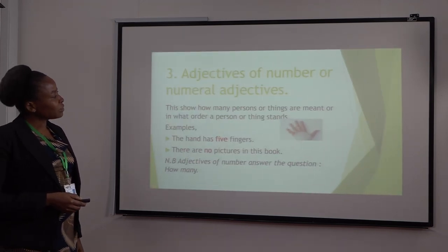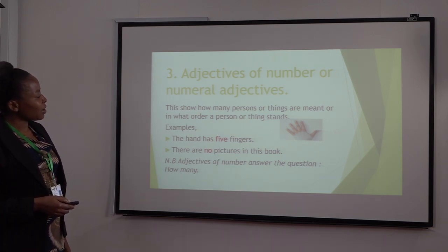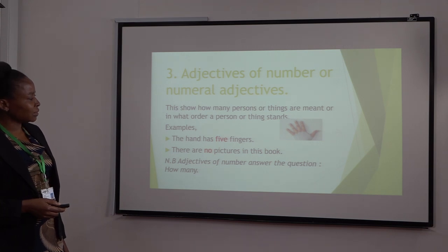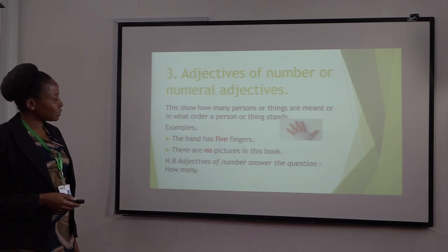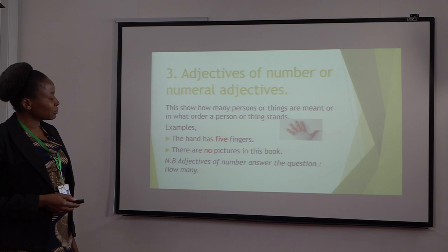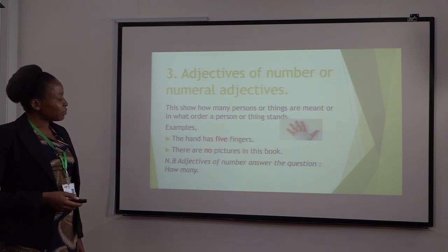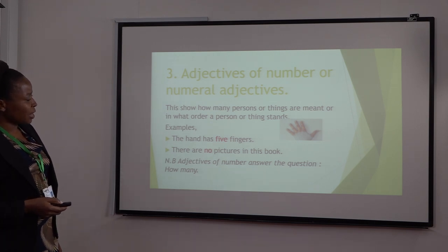Adjectives of number, or numeral adjectives. These show how many persons or things are meant, or in what order a person or thing stands. For example, 'The hand has five fingers.' Five is an adjective of number. 'There are no pictures in this book.' No is an adjective of number. Note: adjectives of number answer the question 'how many.'